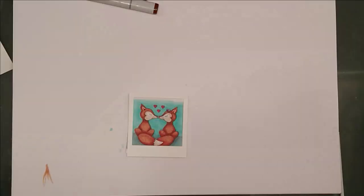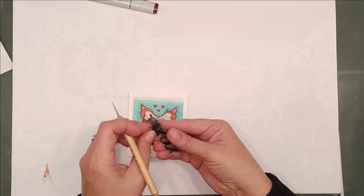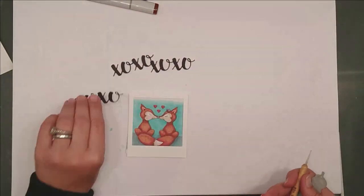I've got this cute little sentiment die from Reverse Confetti. I cut it out three times from black cardstock and then I cut out two more heavy white cardstock rectangles the same size as my Polaroid.